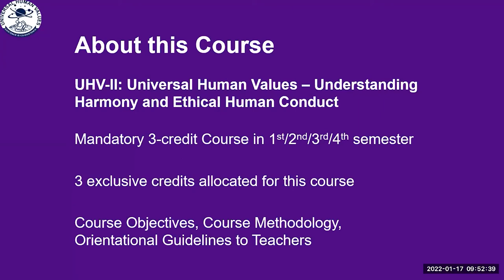With self-development at the base, we can be prepared as teachers who can teach UHV-2 effectively as co-explorers. This course is called UHV-2: Universal Human Values — Understanding Harmony and Ethical Human Conduct. It is a mandatory three-credit course to be offered in the first, second, third, or fourth semester, with three exclusive credits allocated in the model AICTE curriculum.